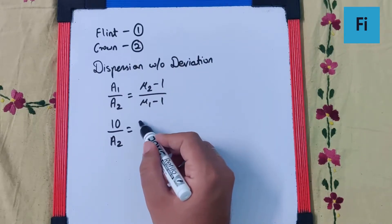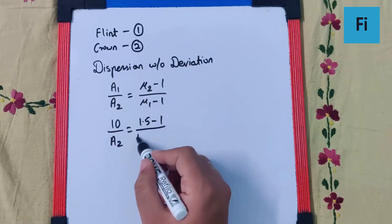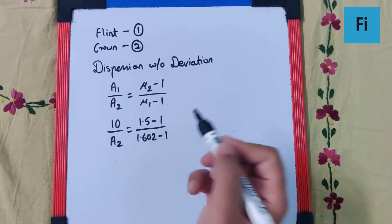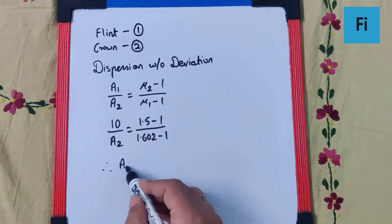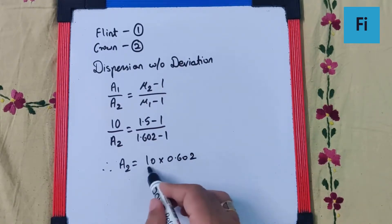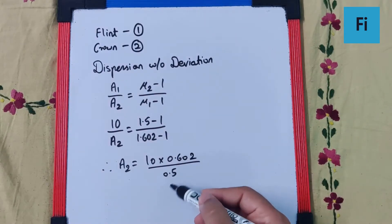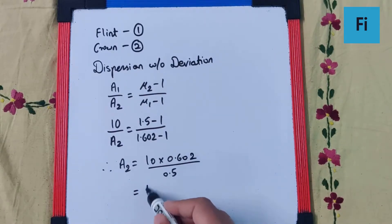Mu2 is given as 1.5 minus 1 upon mu1 as 1.602 minus 1. So a2 value will be 10 into 0.602 upon 0.5. 0.5 goes up as 2, so 10 into 2 multiplied here. That gives 4, 0, 2, 1. So 12.04 degrees.